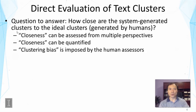We also want to quantify the closeness, because this allows us to easily compare different methods based on their performance figures. In this case, we essentially inject the clustering bias by using humans — humans bring the needed or desired clustering bias.